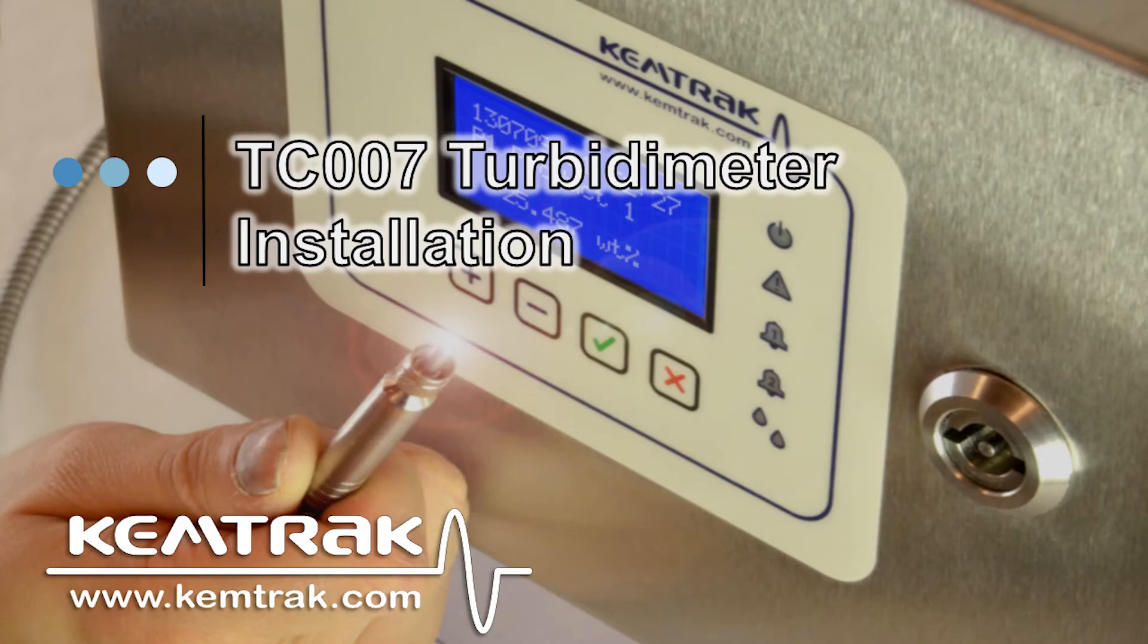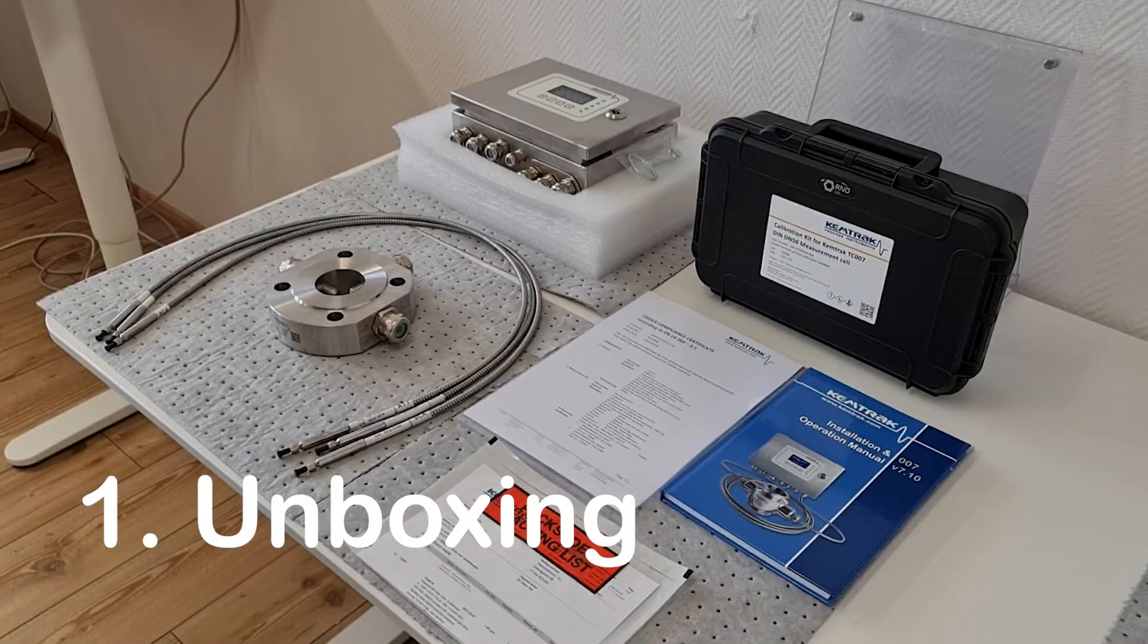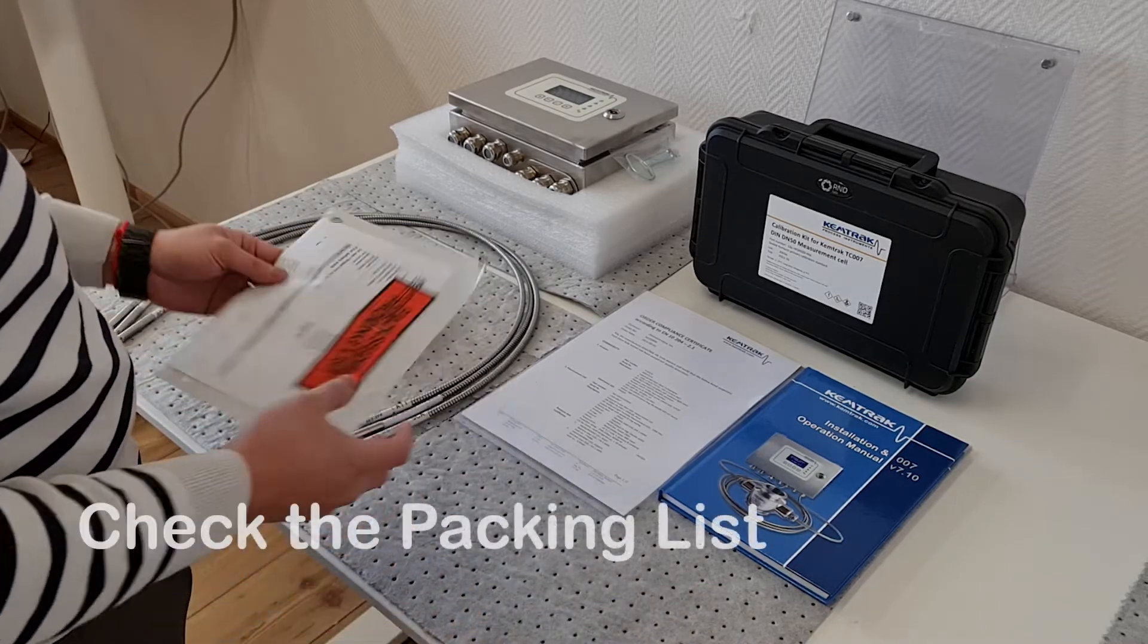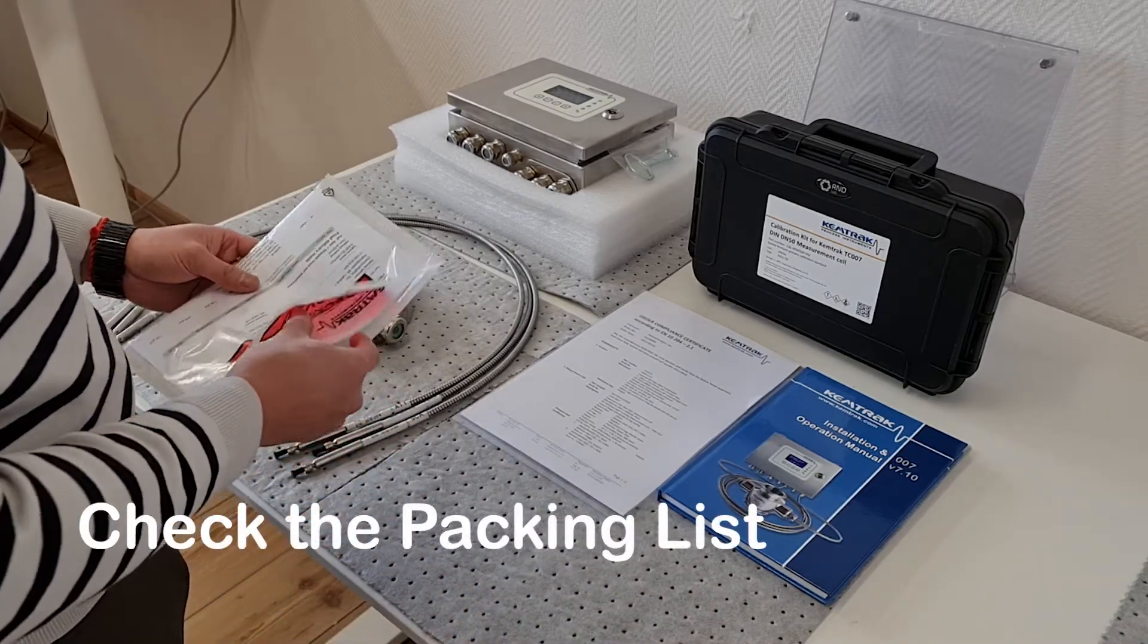This video will show you how to install a Chemtrak TC007 turbidity meter. Before installation, it is important to confirm the contents of the system delivered and that it matches what has been ordered and meets the necessary process specifications.